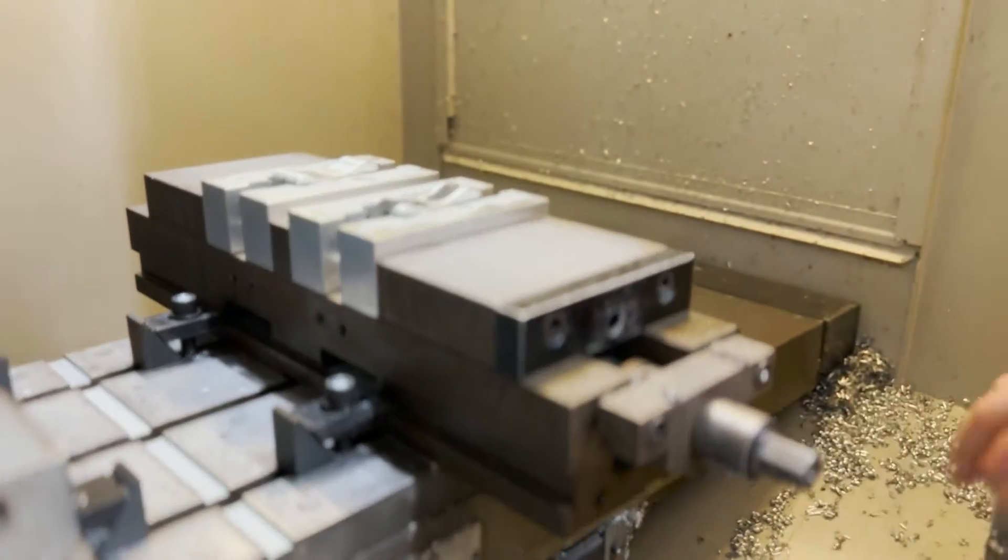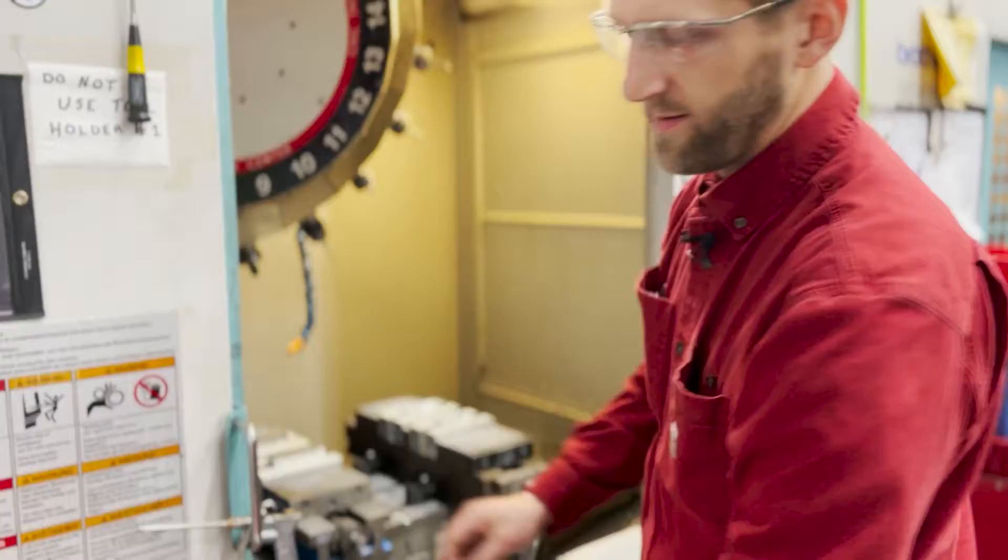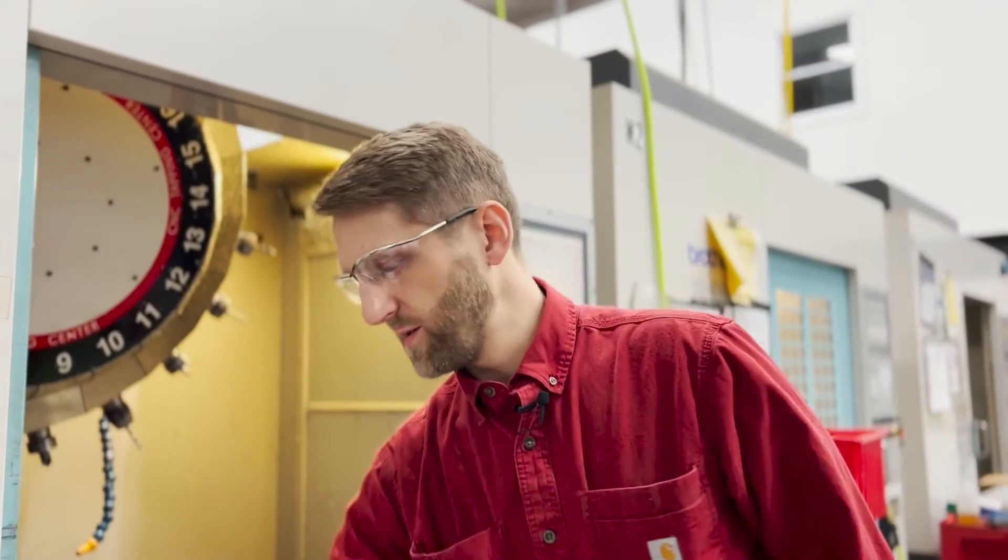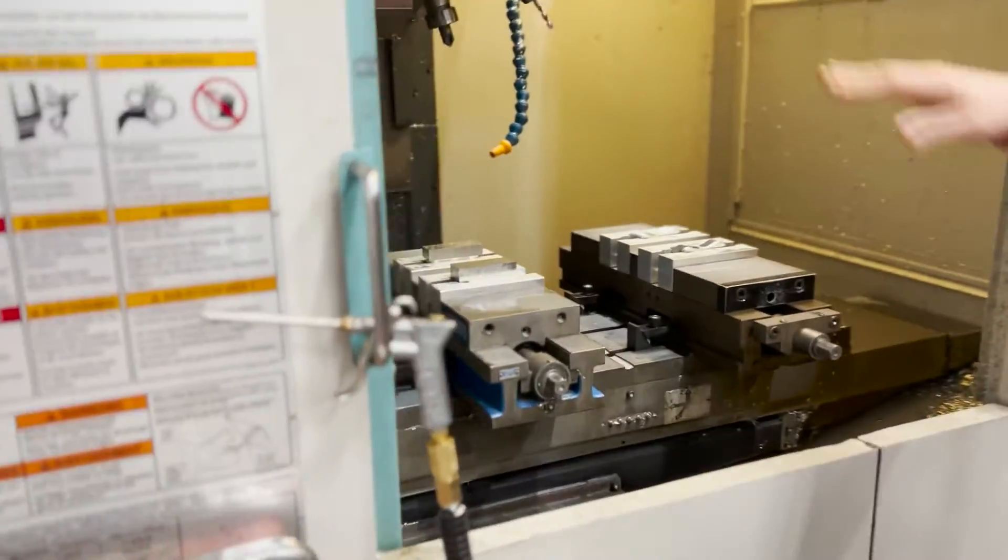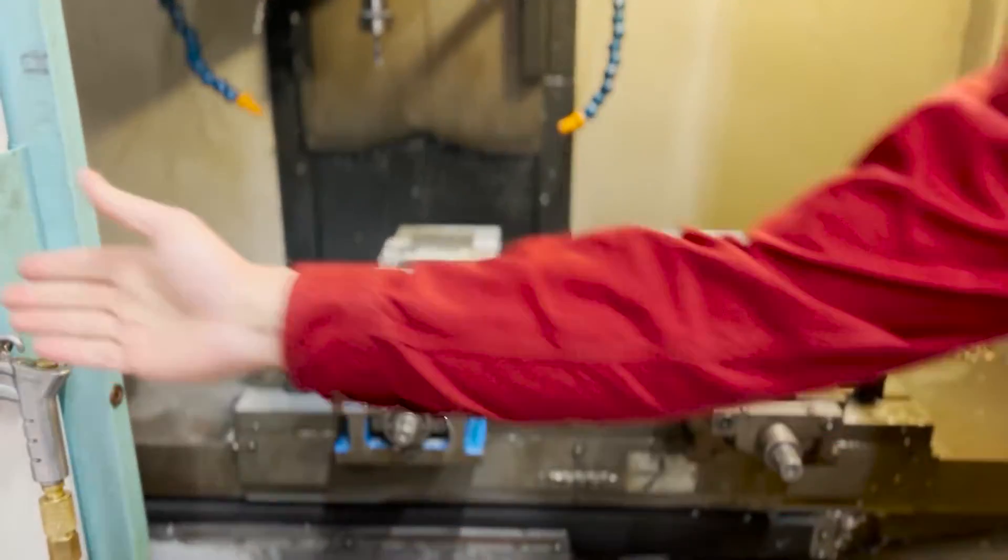This here is a four-stage process to get from a solid block of aluminum to our finished halyard case. We call this the main body of the halyard shackle. We have four different setups, different stages of it going through, load it all up.